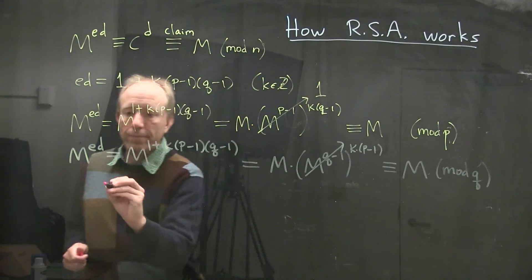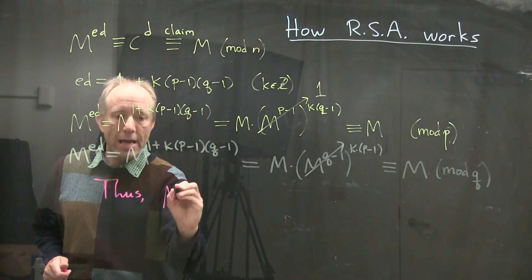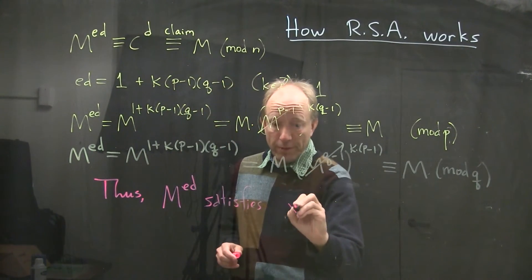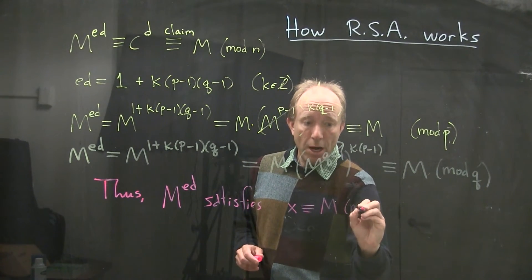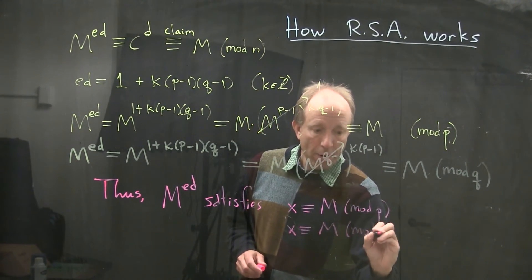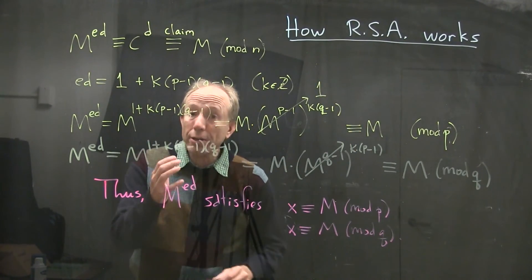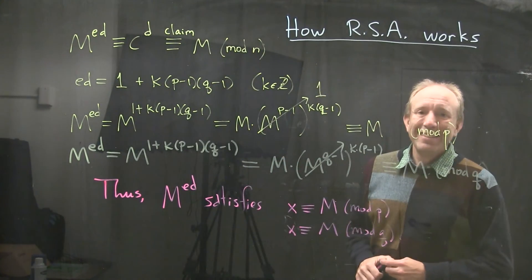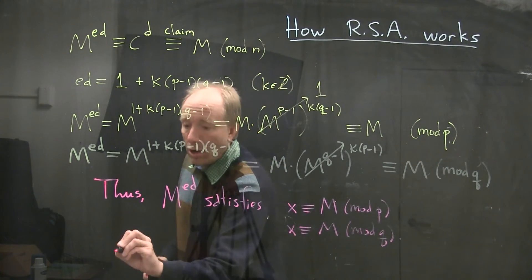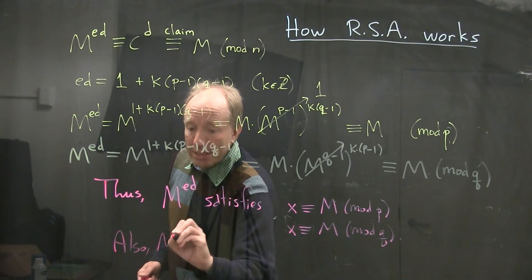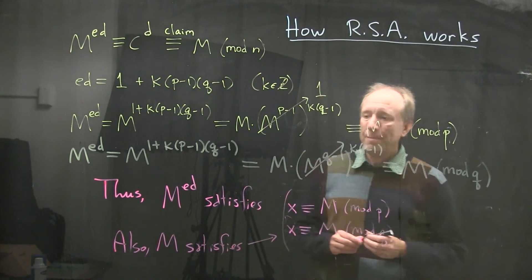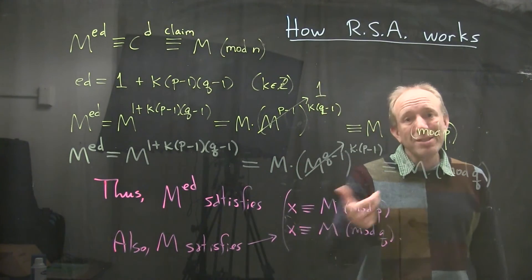So I actually now know, thus, M to the ED satisfies the following system: X is congruent to M mod P, and X is congruent to M mod Q. We have found a solution to this system of congruences. And now we can actually invoke the uniqueness part of the Chinese remainder theorem. Because we can also note that M itself satisfies the same system of congruences. We have found two solutions to the same system of congruences.